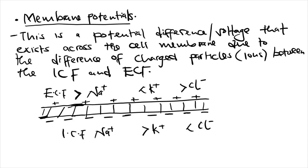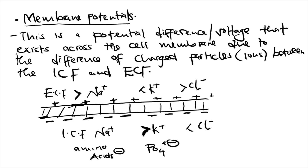The reason for this charge distribution is that inside the cell we have amino acids and organic phosphates, both of which are negatively charged. The outside is positively charged because it has more positively charged species like sodium and potassium. Additionally, potassium leaves the inside of the cell, contributing to the negative inner charge and positive outer charge.